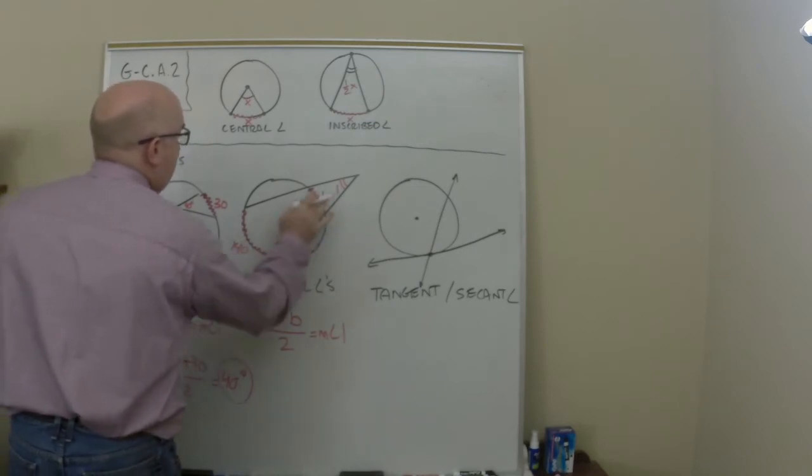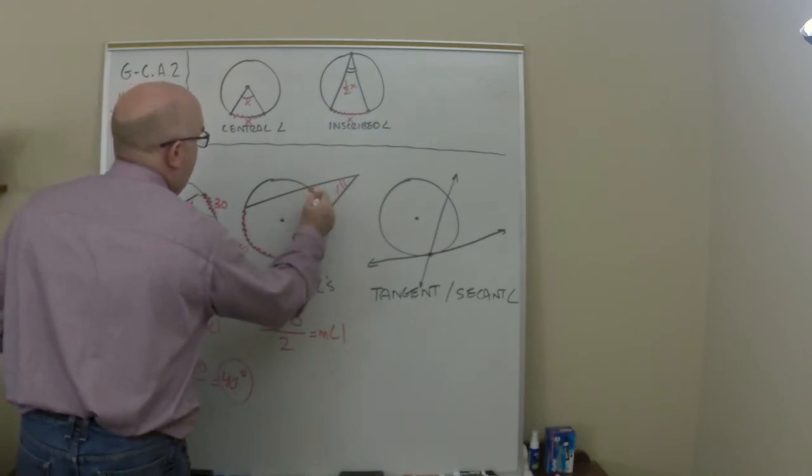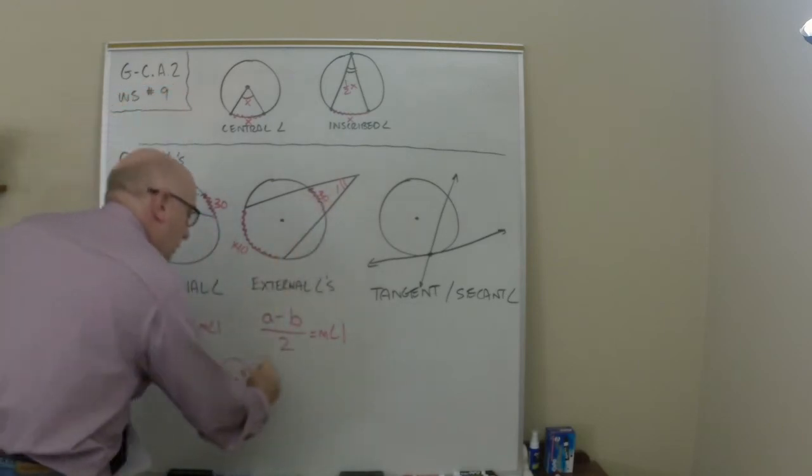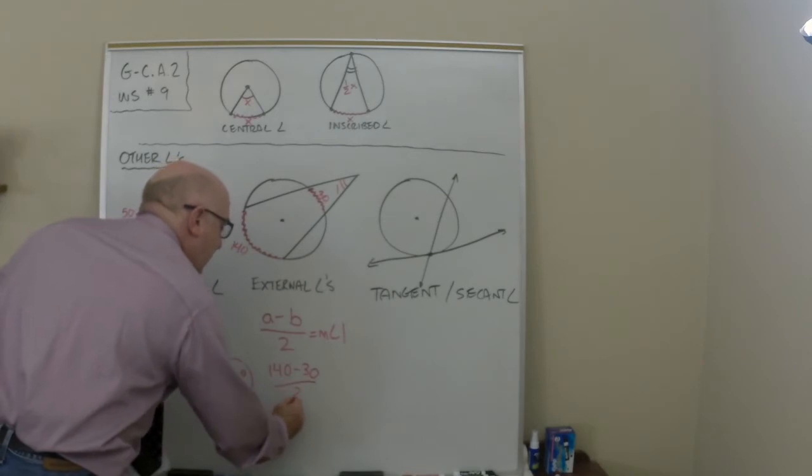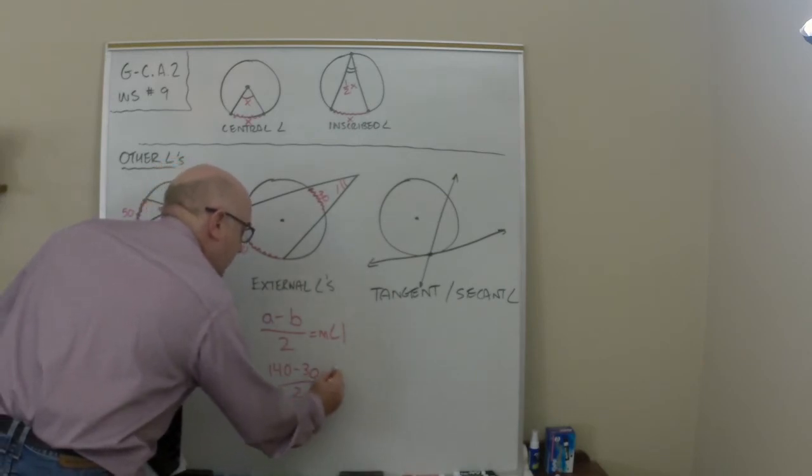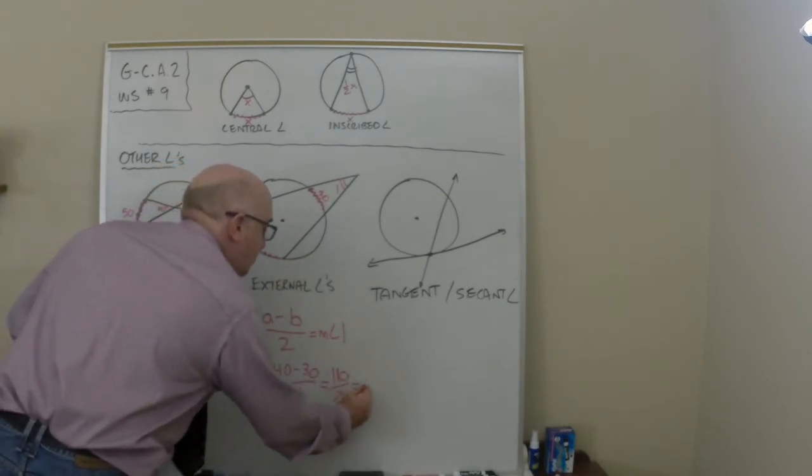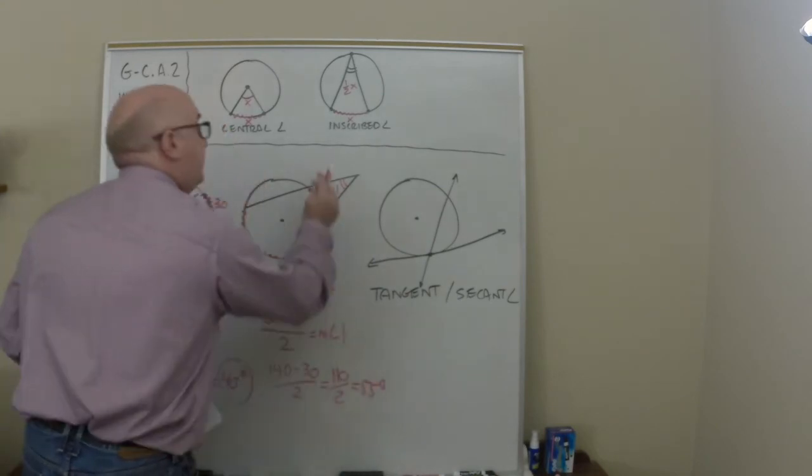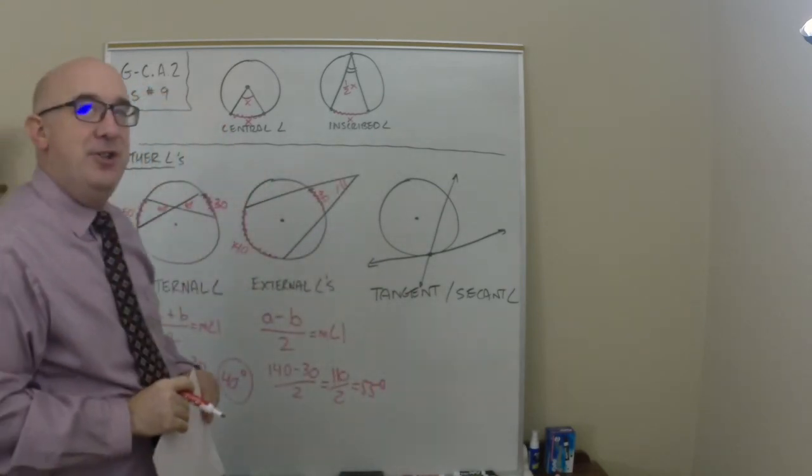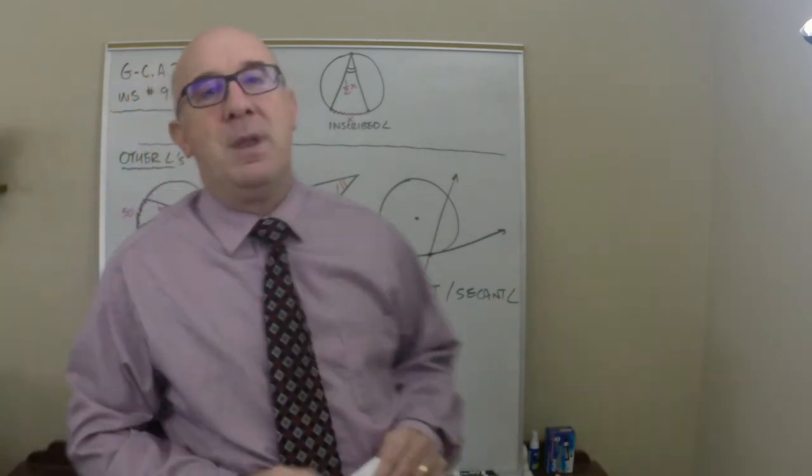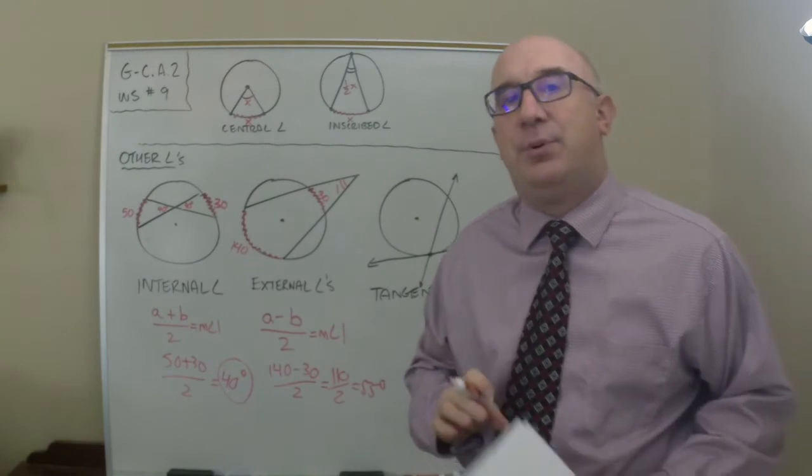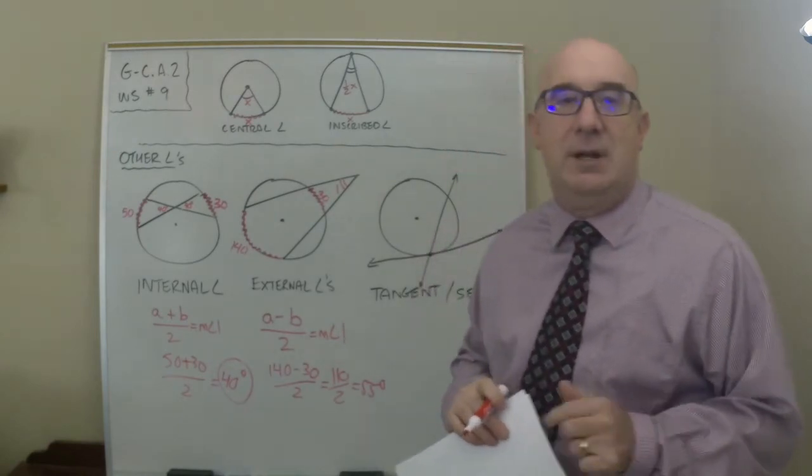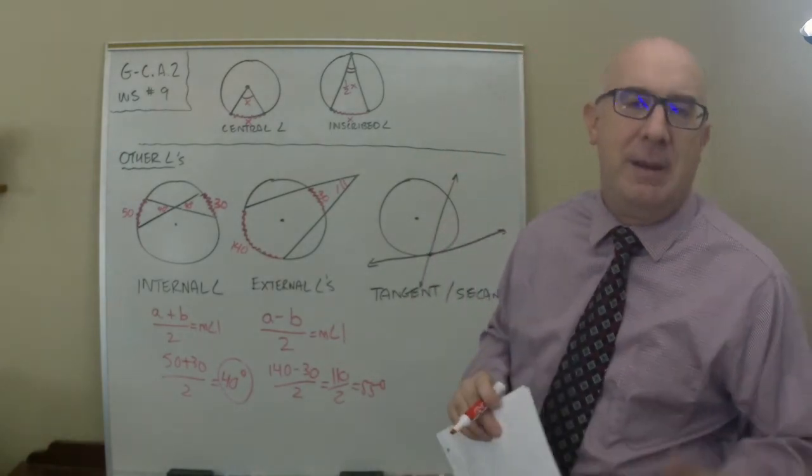So let's say this was 140 out here, let's say this was 30 in here. We would do 140 subtract 30 divided by 2. Now that's 110 divided by 2, so we have a 55 degree angle in that location there. Simple like that. Now again, I feel a little guilty that I'm not doing the proof here. Maybe that's another video. Here we're cutting straight to the relationships.